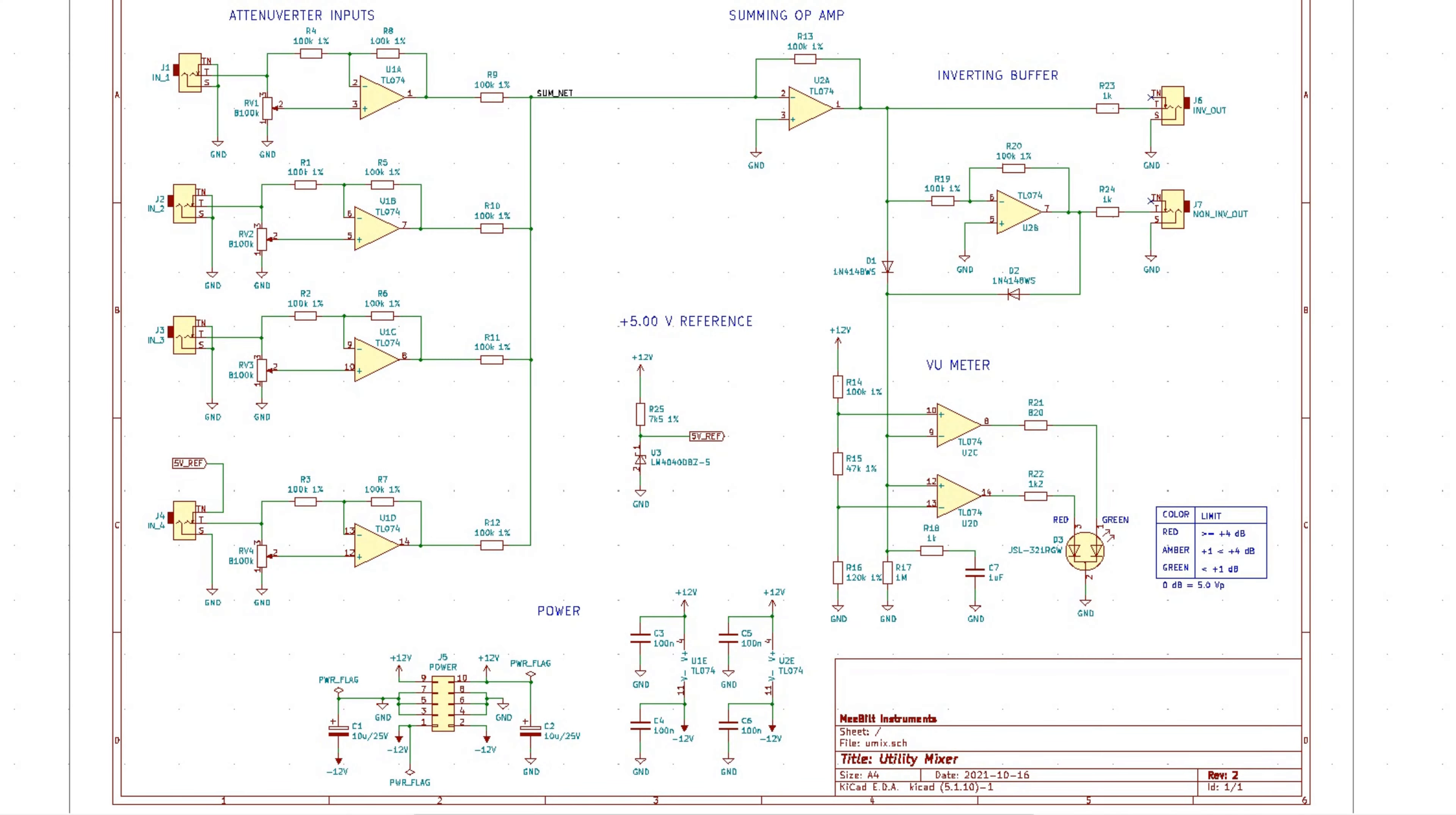Okay, so here's the schematic. If you start with the left side here, we have the four attenuverter inputs and they are connected to an inverting op-amp with a summing net. So this is the mixing part. And after that it's also connected to an inverting buffer. That means that we get both inverting output and non-inverting output from the mixer.